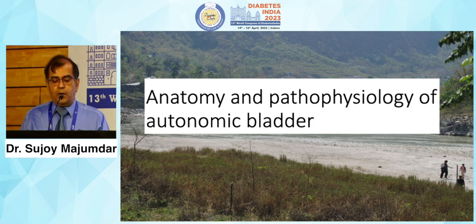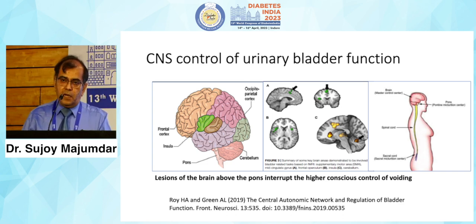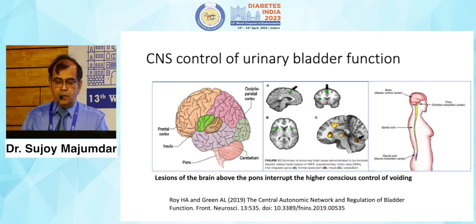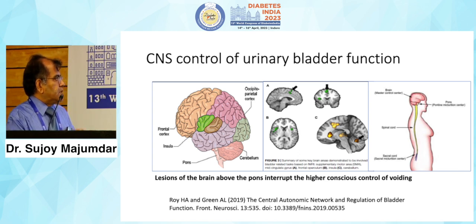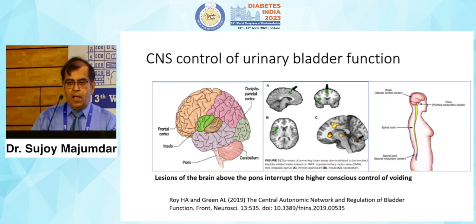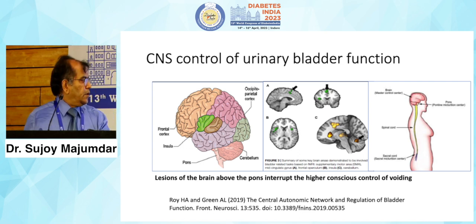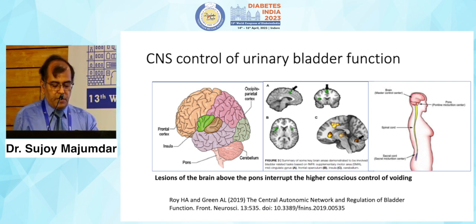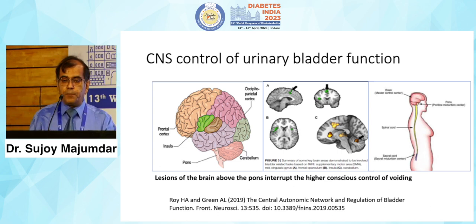A little about the anatomy and pathophysiology of the autonomic bladder — it is a study of the entire nervous system, starting from the brain down to the peripheral nerves. The control of bladder function starts from the frontal cortex. Thanks to advanced radionuclear imaging, we have found certain areas of the brain — for example the insular area and the frontal operculum — which are involved in bringing signals down to the pons.